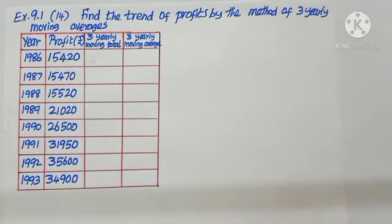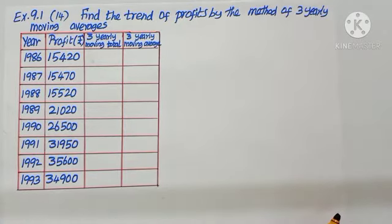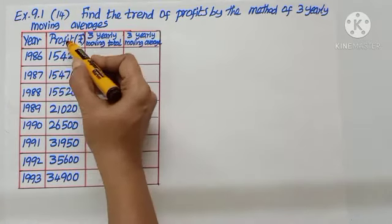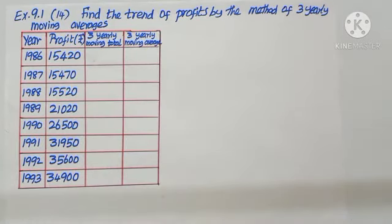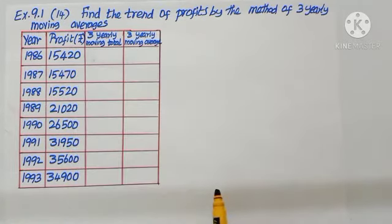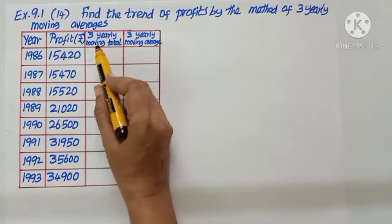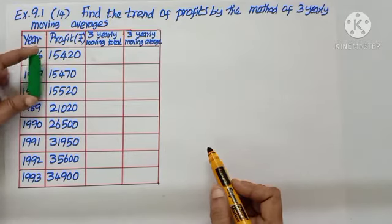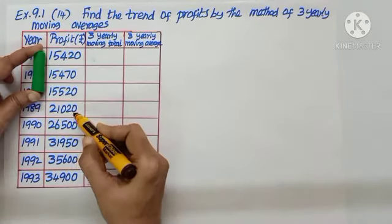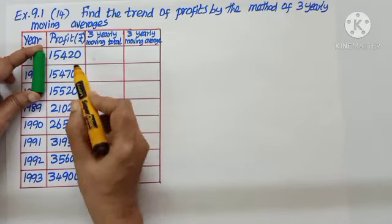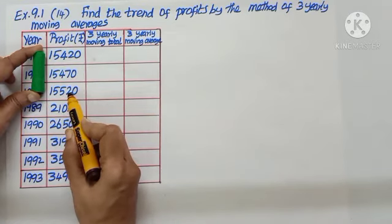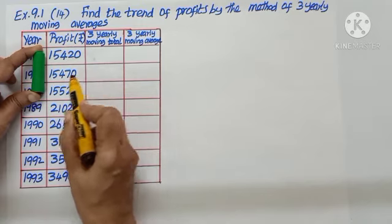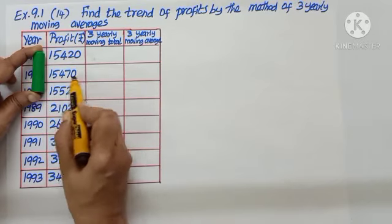Question number 14 we are doing the method of 3-yearly moving average, so here the moving period is 3. The years we have tabulated as in the question, the profits are tabulated as in the question given. Profits in rupees. Find out 3-yearly moving total. That is, combine first three years total and write it in the middle. 1, 2, 3 I am adding, write it in second. So 1, 2, 3, the total I am writing against the middle value, that is the second data.